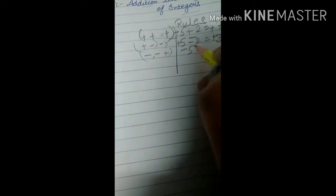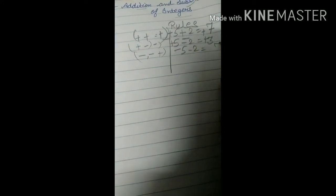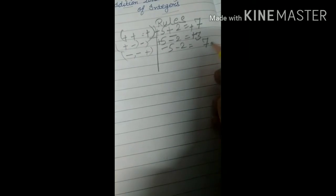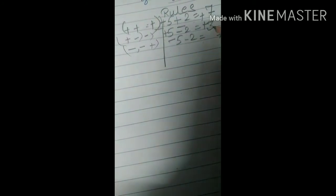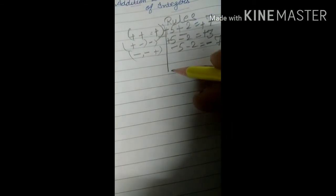Minus minus is your plus — so minus minus gives plus, meaning 5 and 2 gives 7 plus, but the sign always becomes that of the bigger number. So these are the important rules: plus plus is plus, plus minus is minus, minus minus is plus — but always take the sign of the bigger number.